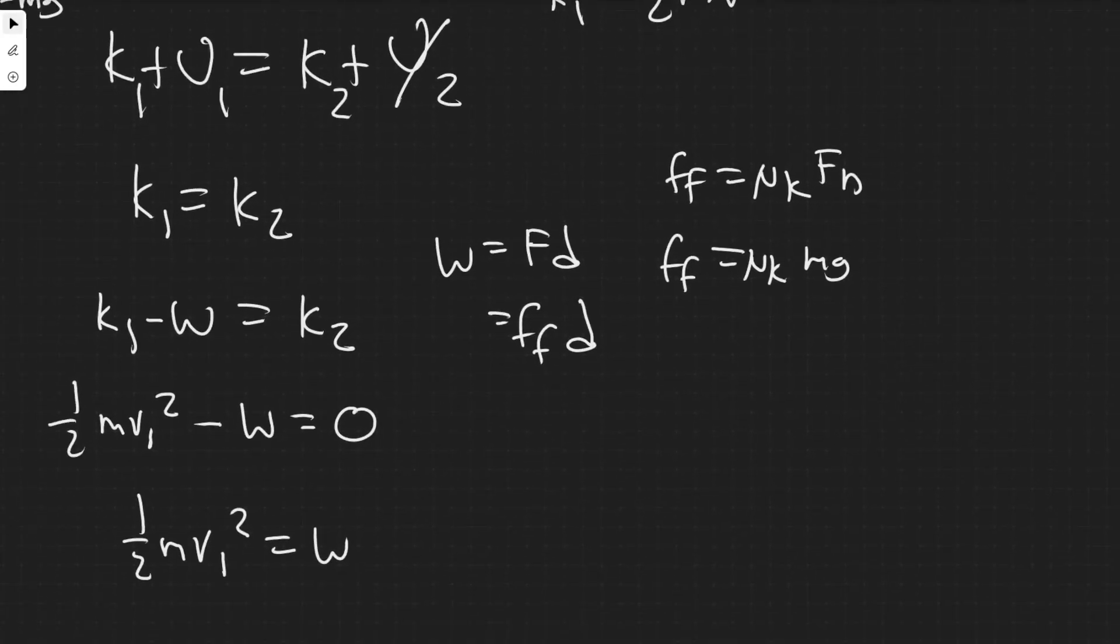Basically μk times mg is your force of friction. Now we can plug this in. Force of friction is μk times mg, and work we multiply by the distance. So work equals μk·mg·d.